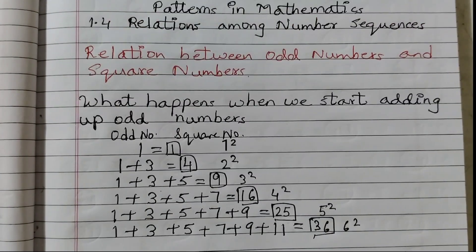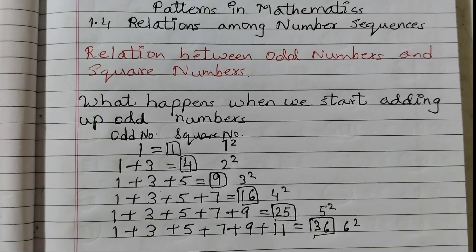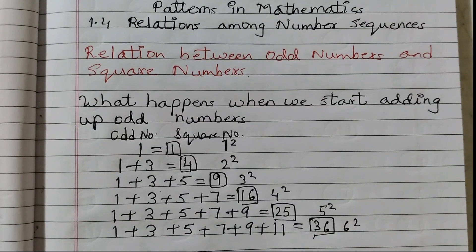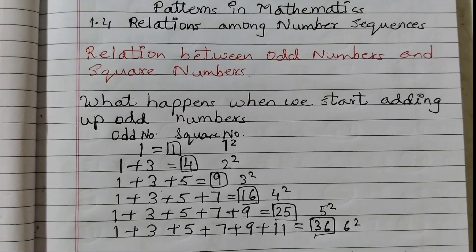Why does this happen? Do you think it will happen forever? The answer is that the pattern does happen forever. We are going to partition the dots in a square grid into odd numbers of dots. We are going to take 36 dots and split it in such a way so that we can show the numbers 1, 3, 5, 7, 9, 11. And that we are going to do now.